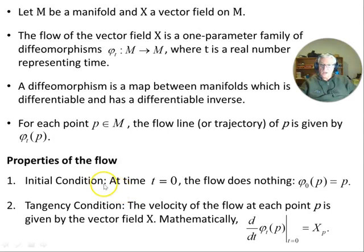Properties of the flow. Initial condition: at time t equals zero, the flow does nothing. So phi_zero of p is equal to p at point p.